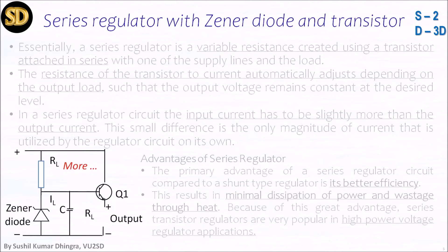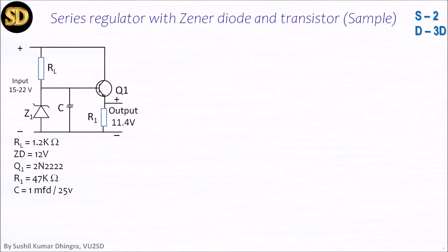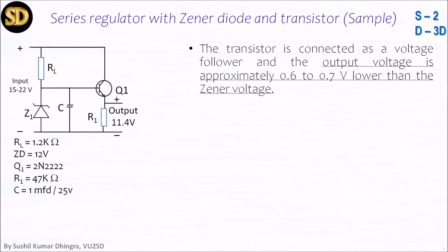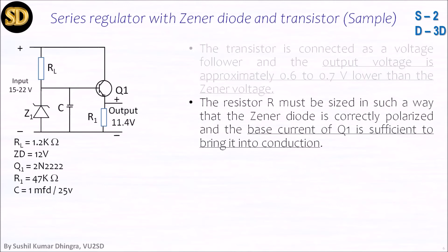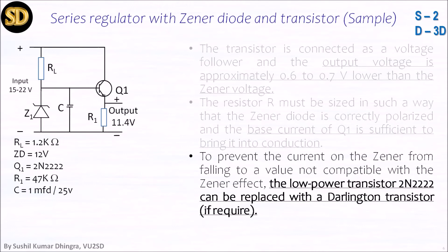Going more on this topic, now coming with a sample numerical — note that the values are just examples to demonstrate; for actual values go to the proper circuits. The transistor is connected as a voltage follower and the output voltage is approximately 0.6 to 0.7V lower than the Zener voltage because of the internal PN junction drop. The resistor R must be sized in such a way that the Zener diode is correctly polarized and the base current of Q1 is sufficient.